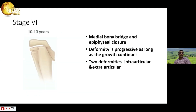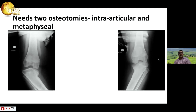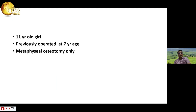Stage 6 is really bad. There is a medial bony bridge and epiphyseal closure, and the deformity will progress as long as growth continues. There are definitely two deformities — intra-articular and extra-articular — and two osteotomies will be needed: an intra-articular osteotomy and a metaphyseal osteotomy. I would prefer to do them in stages.